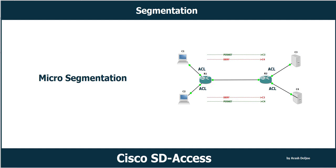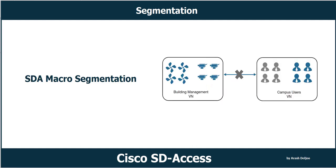In micro segmentation we segment inside of a single network. In macro segmentation we segment a physical network into multiple virtual networks — that is outside of each network. In micro segmentation, we implement segmentation inside one instance of a virtual or physical network. It is also possible to combine both: for example, you define VRFs for macro segmentation and inside each VRF you implement micro segmentation.